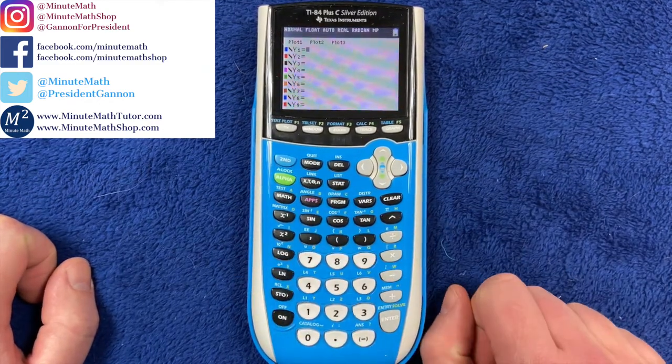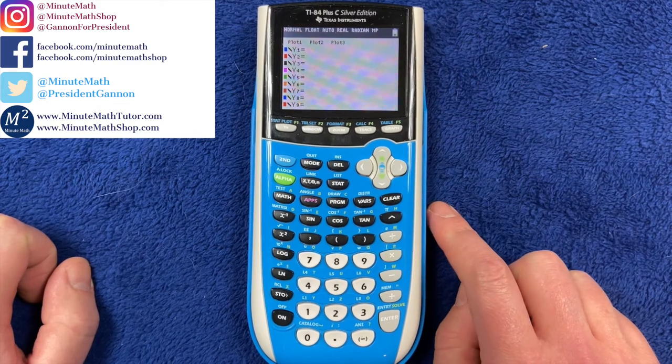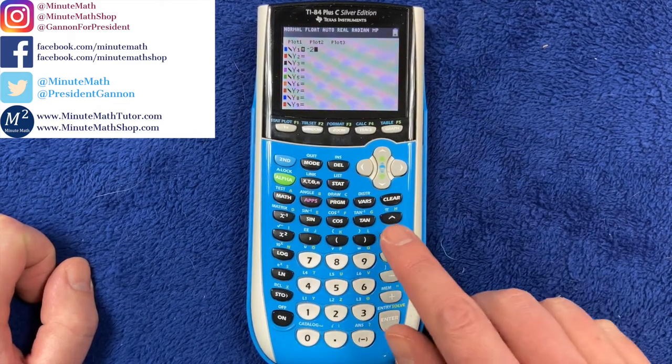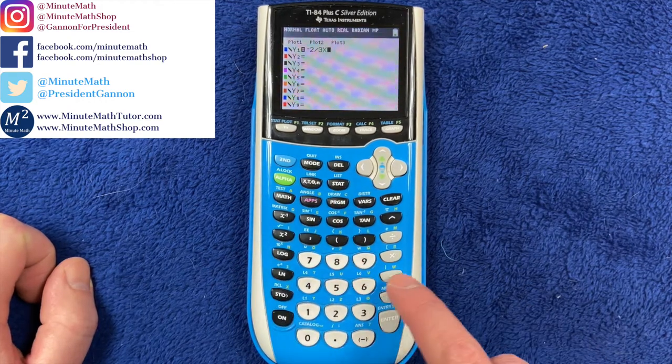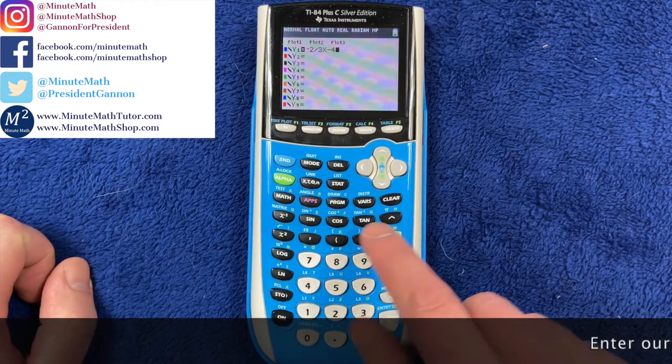So if we go to y equals, we can type in our equation. In this case, we have negative 2 thirds x, which is this button right here, x, minus 4 thirds.